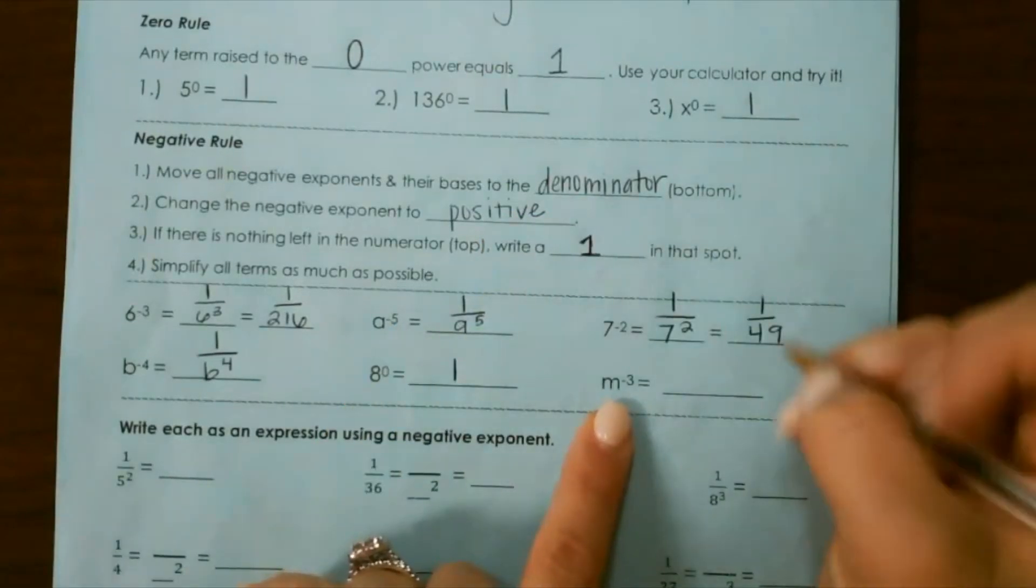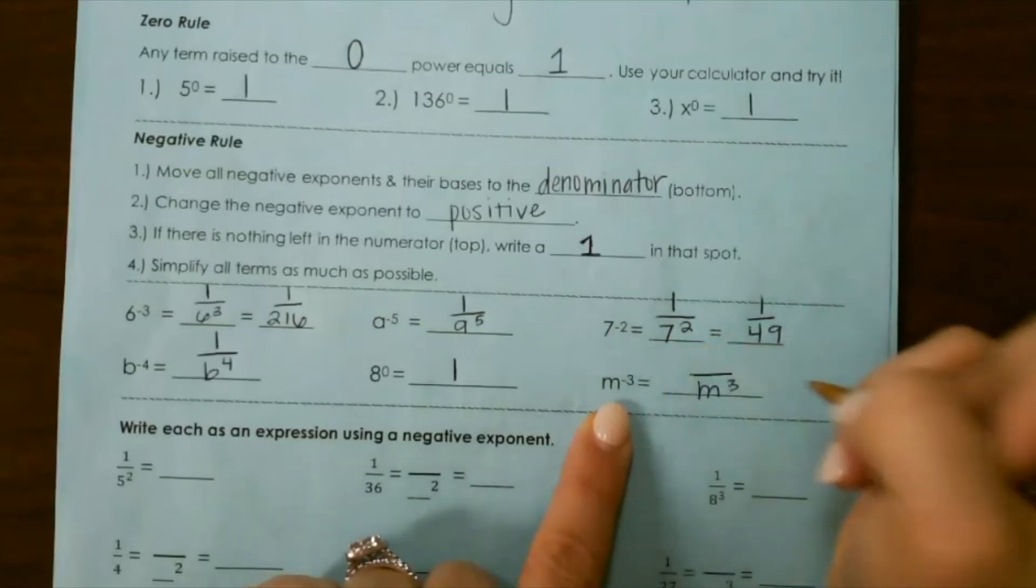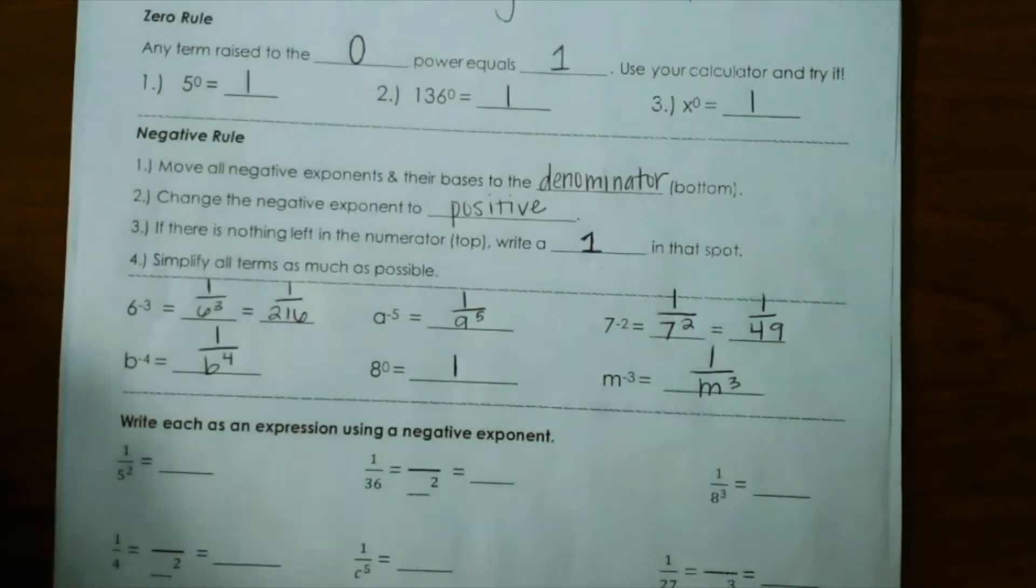And for our last example, m to the third power goes to the bottom, and 1 will go on top.